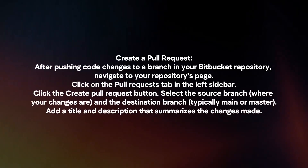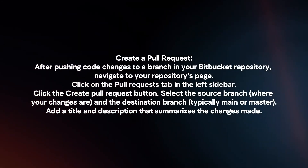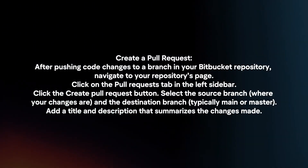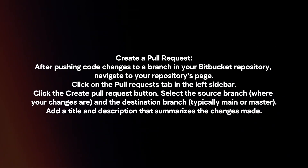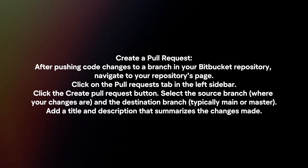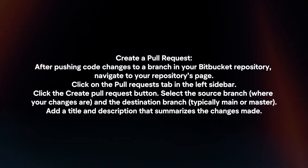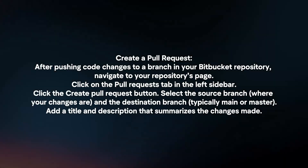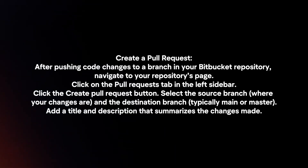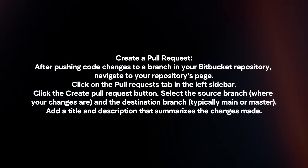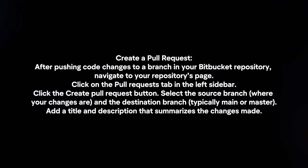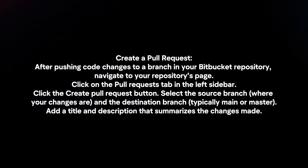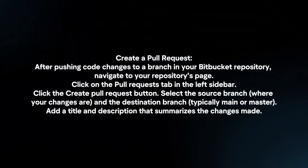Create a pull request. After pushing code changes to a branch in your Bitbucket repository, navigate to your Repositories page. Click on the Pull Requests tab in the left sidebar, then click the Create Pull Requests button. Select the source branch and the destination branch, and add a title and description that summarizes the changes made.